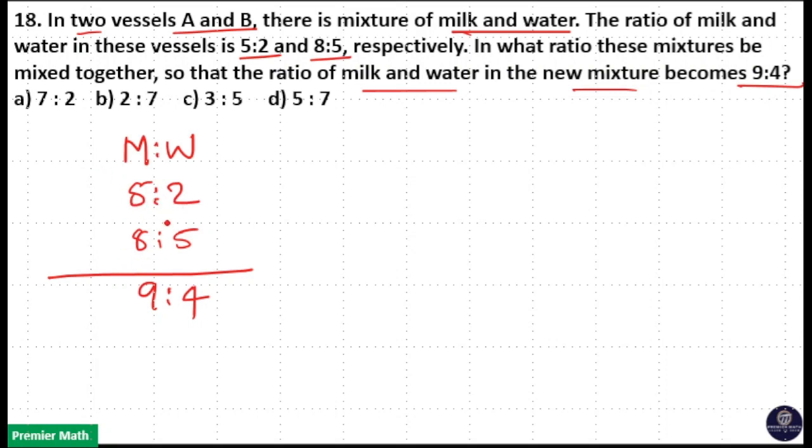To find out the ratio, take the total parts here. 5 plus 2 is equal to 7 parts, 8 plus 5 is equal to 13 parts, 9 plus 4 is equal to 13 parts.